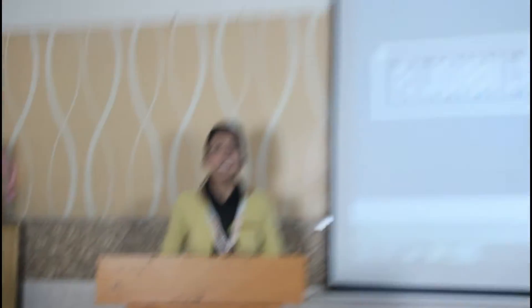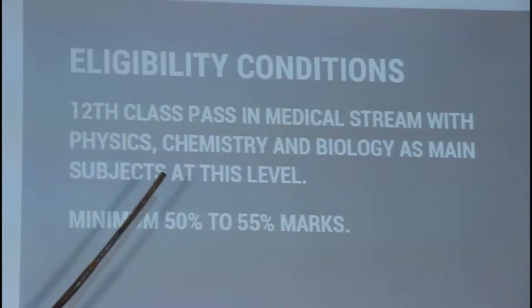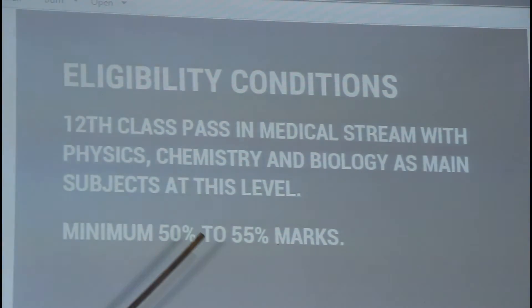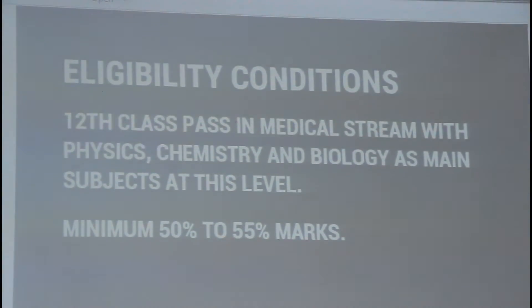Now, when you are well aware about who a radiologist is, you would be interested to know about the eligibility conditions. The eligibility conditions required to become a radiologist are: you have to pass your 12th class in the medical stream with physics, chemistry, and biology as main subjects. However, there are some colleges that demand a minimum percentage of marks at this level, which can be anything between 50 to 55%.